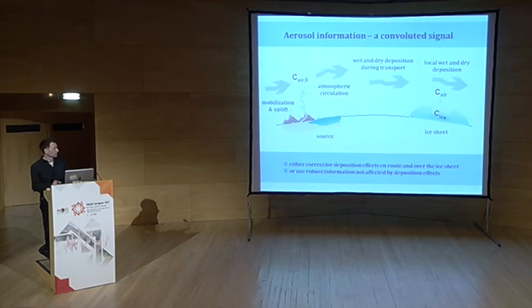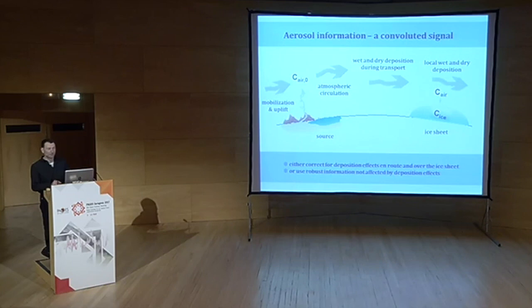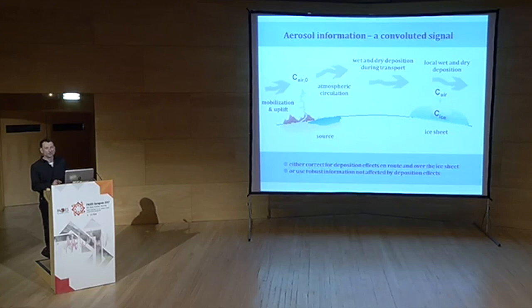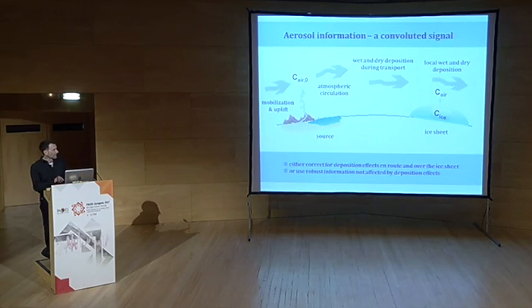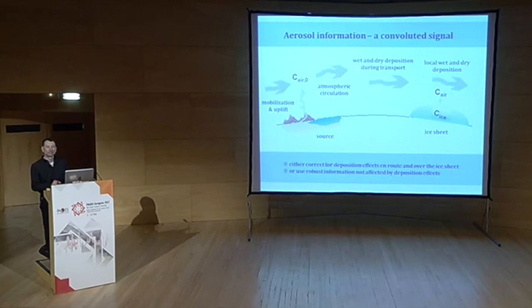We measure the concentration in the ice core, but what we're really interested in is the concentration in the atmosphere at the source, which is reflective of emission changes. Emission changes lead to changes in atmospheric aerosol concentration, but then we have long-range transport with significant aerosol loss, especially by wet deposition. This loss is dependent on accumulation rate, which also changed in the past. There is also the transfer function from atmospheric aerosol into snow. The major effect is the loss during transport, so either you correct for this transport effect, or you look at parameters not affected by this atmospheric loss.